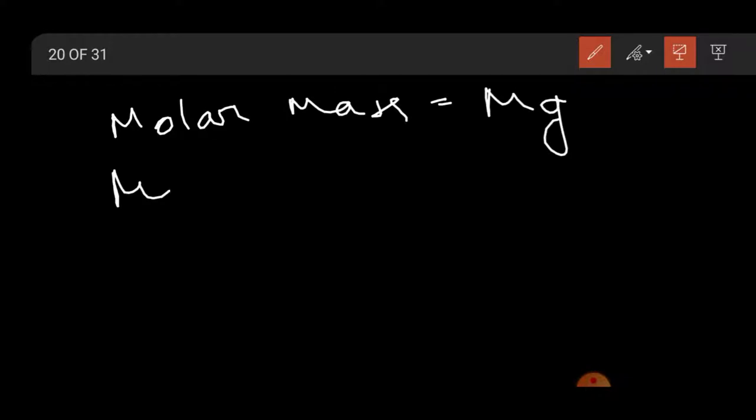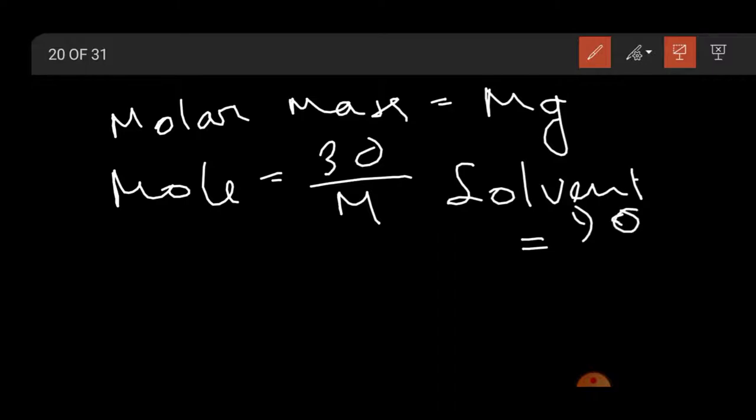Let's see, molar mass equal to m gram per mole, that's 30 divided by m. Solvent equal to 90 by 18 equal to 5 mole.